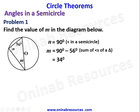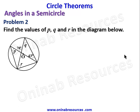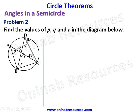Problem two: find the values of P, Q, and R in the diagram. For clearer explanation we label the points on the circle as A, B, C, and D. We can now identify AC as the diameter of the circle.